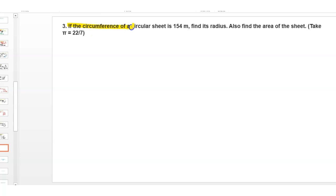Today's question is: if the circumference of a circular sheet is 154 meters, find its radius. Also find the area of the sheet. Here, take π equals 22 upon 7.